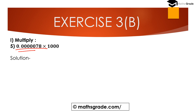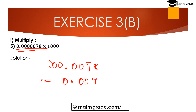Move the decimal point 3 places to the right. So 0.000078 becomes: moving 3 places gives 0.078. The answer is 0.078. If you have any doubt, please comment in the comment section.